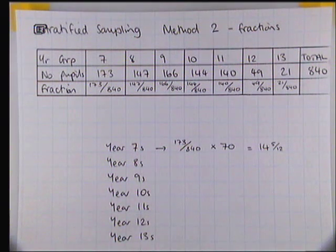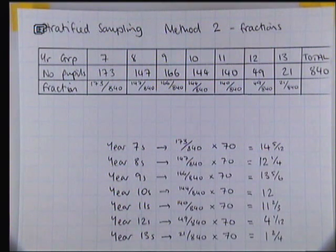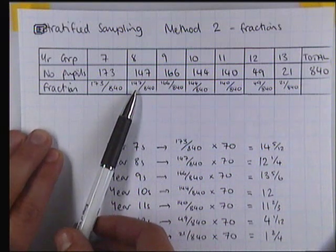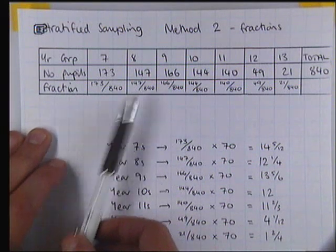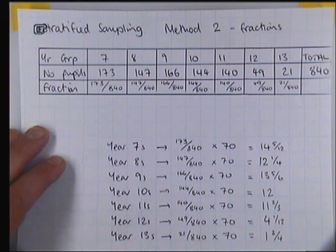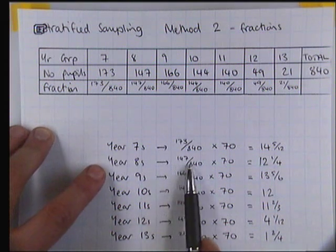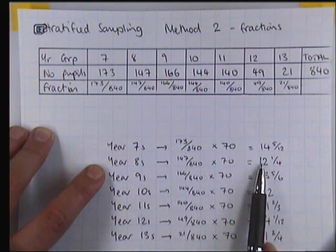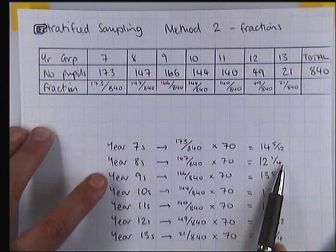We're going to want to round that number in a minute, but if I just go through and fill in the other fractions you'll see how this is done. I have worked out all these fractions out of 70. For the year eights, the original fraction was 147 out of 840. That's the proportion of students who are in year eight, and we want that same proportion of 70 students, which is 12 and a quarter.